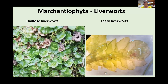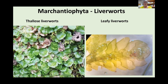The Marchantiophyta, or liverworts, are divided into two different types. One type — the thalloid liverworts — effectively don't have separate leaves and stem; they are just one thallus, basically a plate of tissue, as you can see on the left-hand side. Whereas the picture on the right clearly has one main stem and leaves either side, and in this case it even has a set of underleaves on the back of the stem, which we'll cover in more detail.